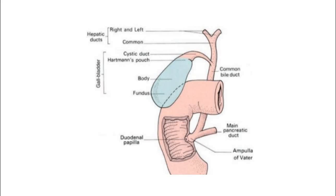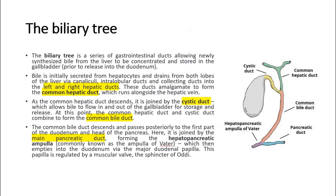The biliary tree is a series of gastrointestinal ducts allowing newly synthesized bile from the liver to be concentrated and stored in the gallbladder, prior to release into the duodenum. Bile is initially secreted from hepatocytes and drains from both lobes of the liver via canaliculi, intralobular ducts, and collecting ducts into the left and right hepatic ducts.